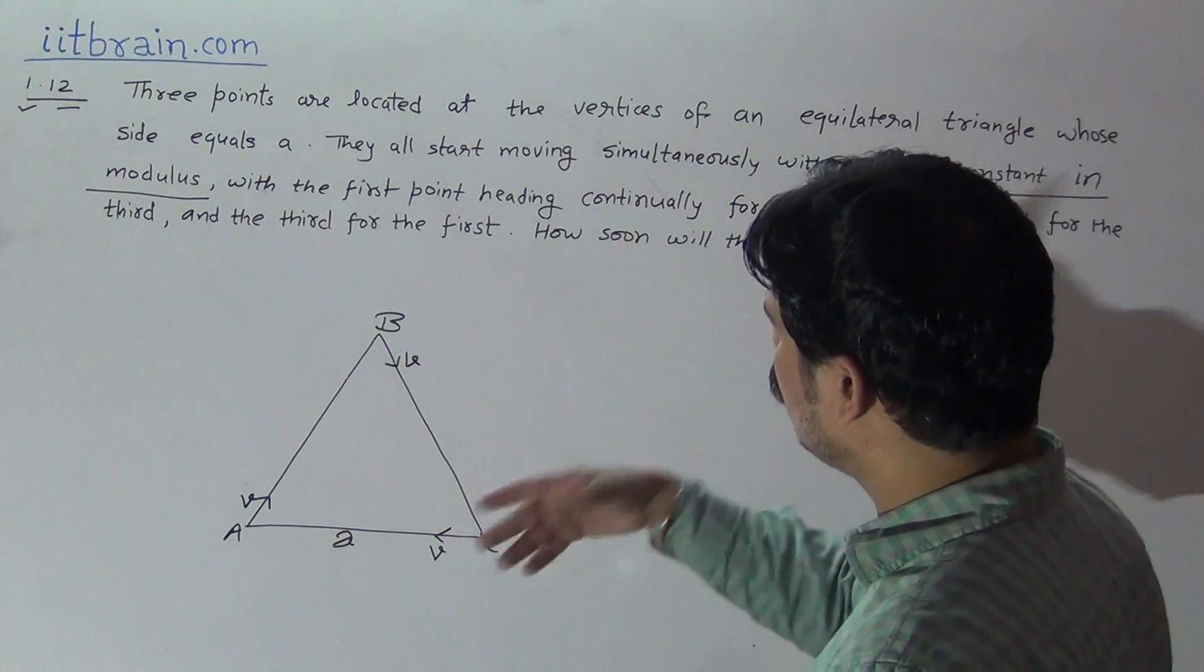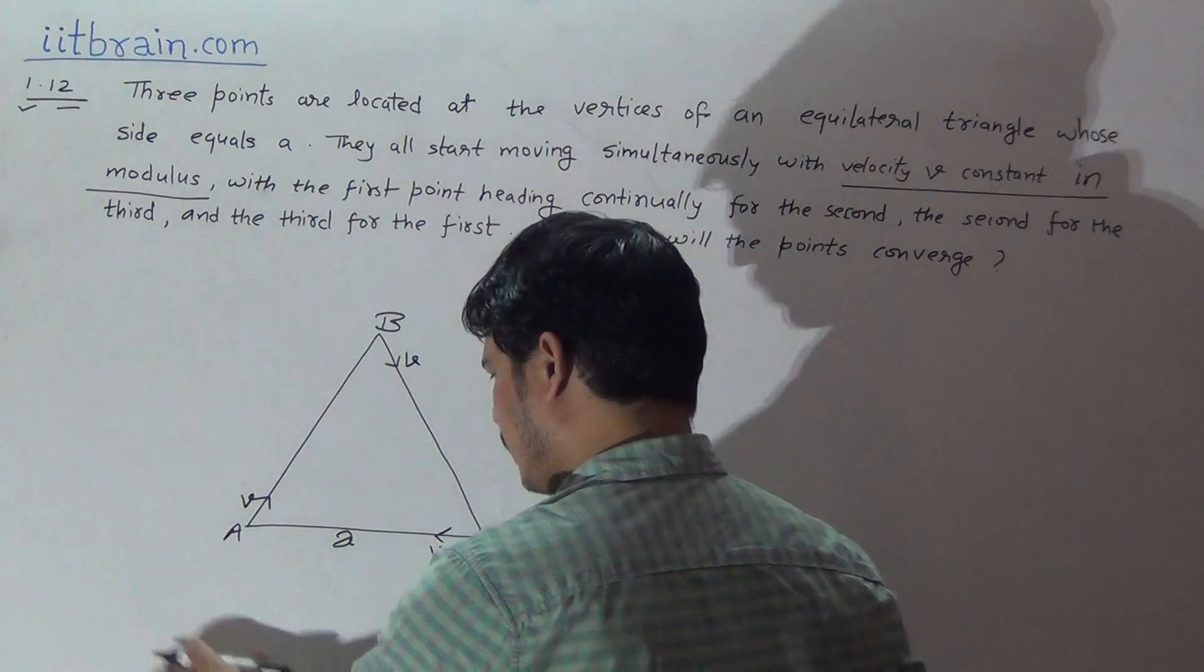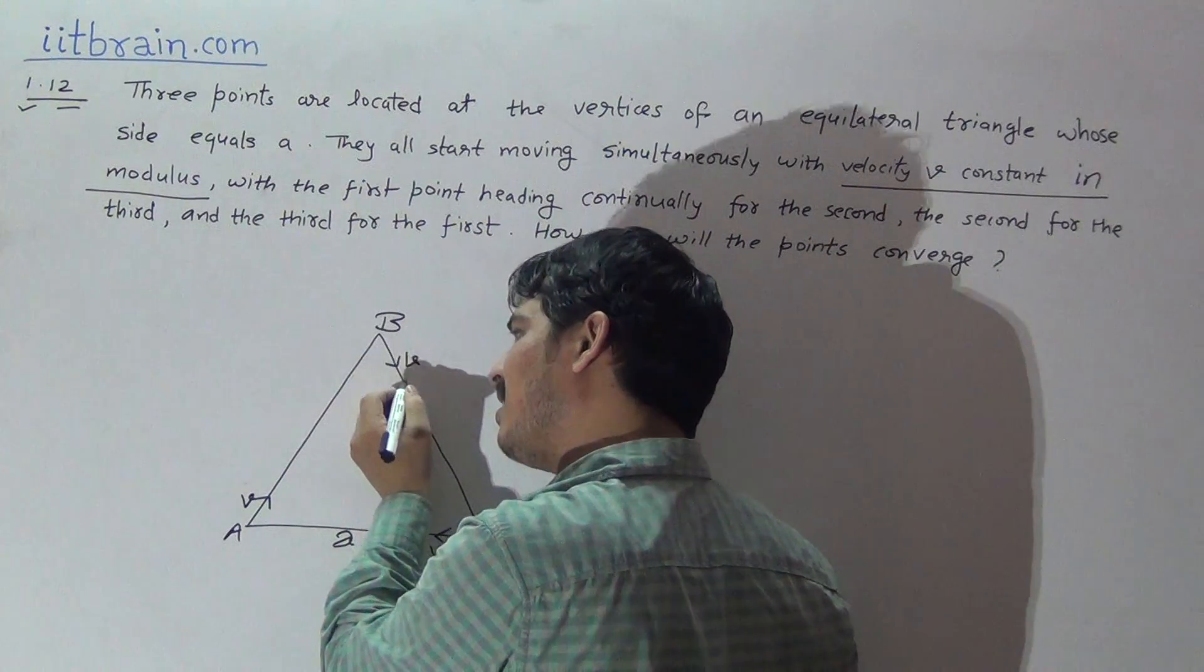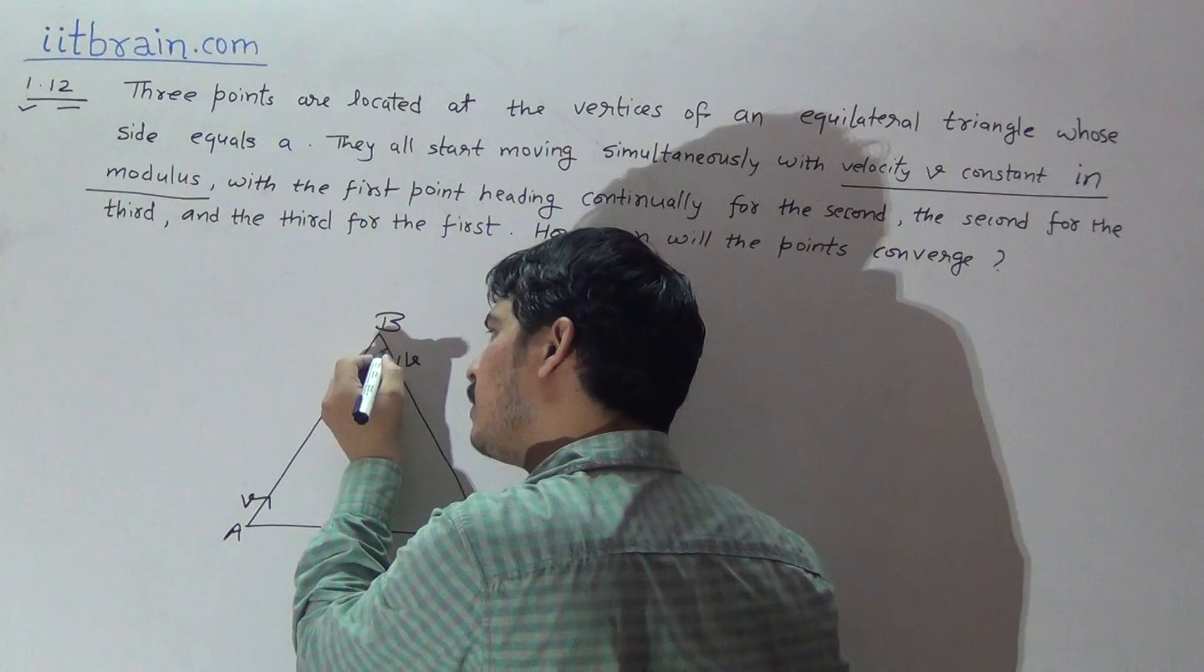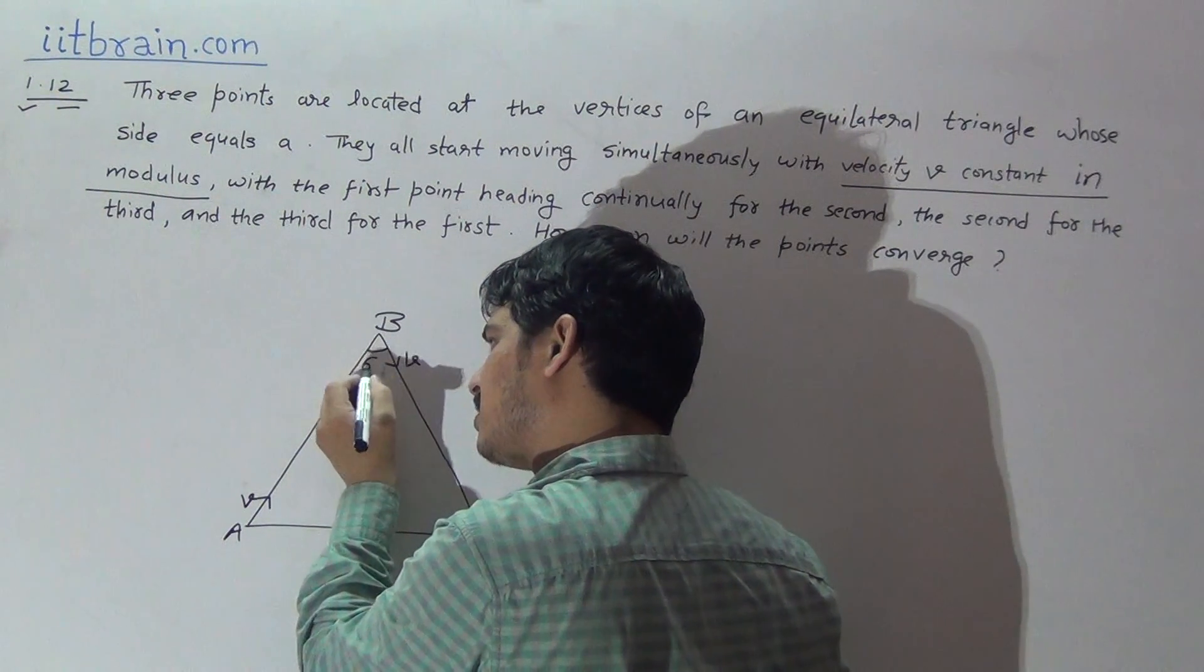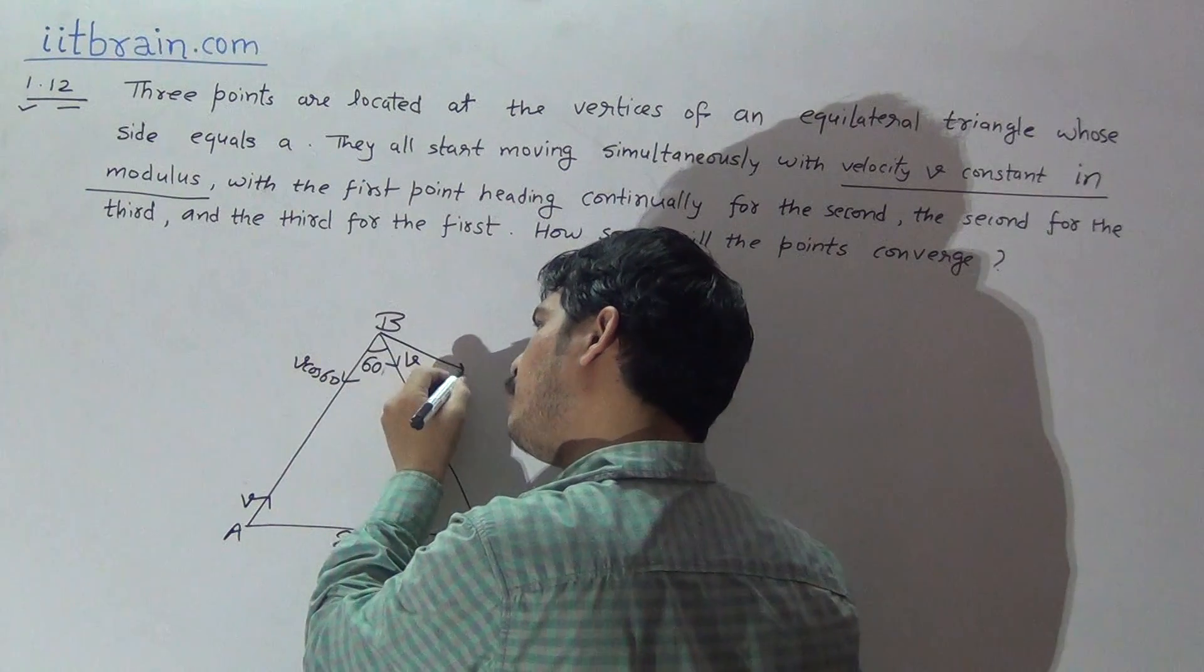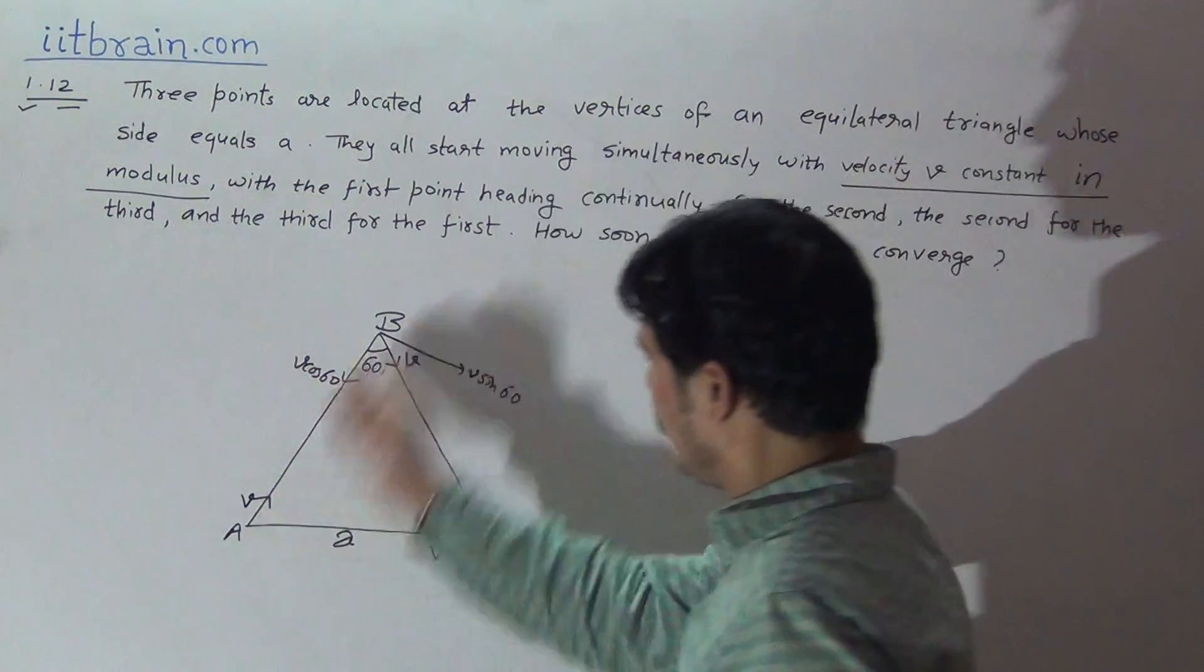So you can solve this question easily by relative velocity explanations. A is moving with V velocity towards B, and B with V velocity in any other direction. If we divide this velocity into components, then this angle is 60 degrees. So velocity of this particle is V cos 60 along A, and V sine 60 perpendicular to the direction of B.